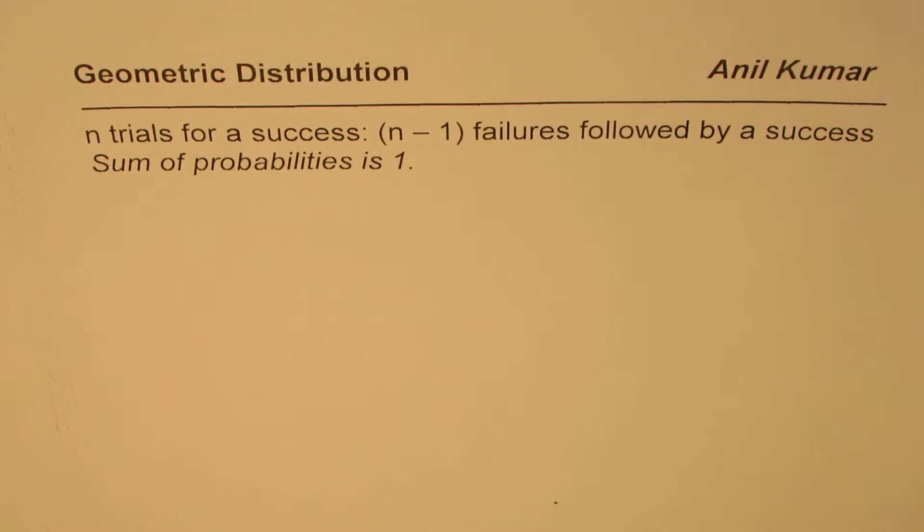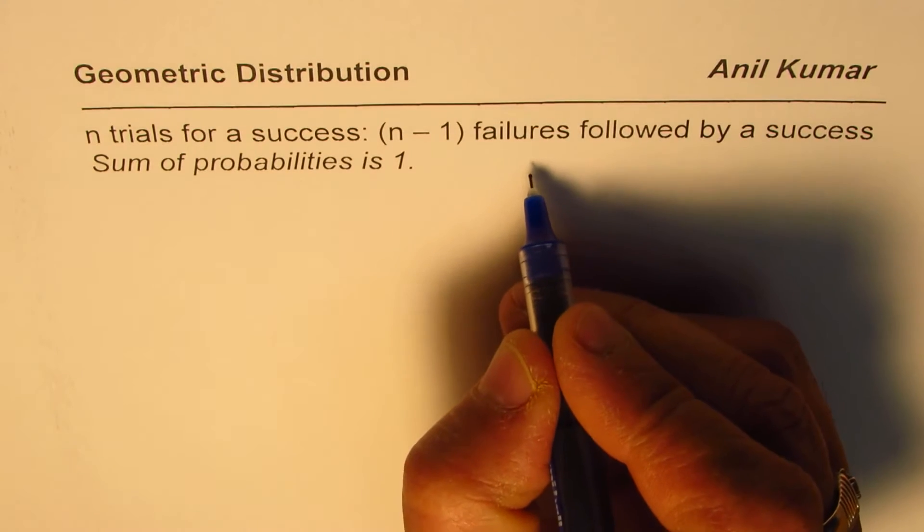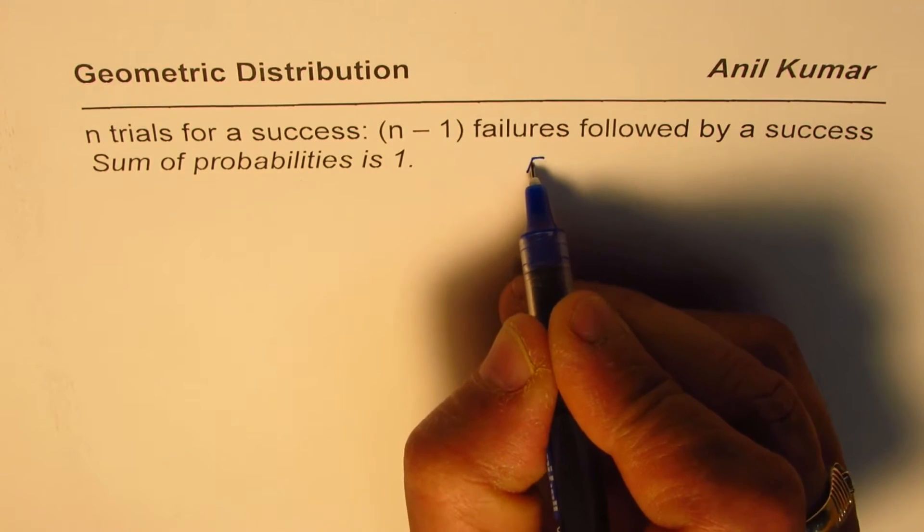So in this video, we'll prove that sum of probabilities for this is always 1. So what do we mean by n trials for a success? It really means that we have series of failures first.